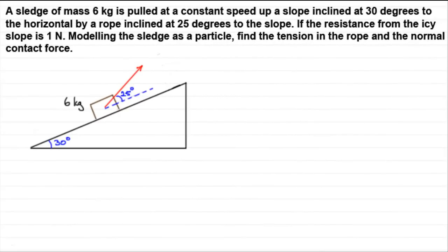Welcome to another video in my tutorials on using Newton's second law of motion — force equals mass times acceleration. We've got a sledge of mass six kilograms pulled at a constant speed up a slope inclined at 30 degrees to the horizontal by a rope inclined at 25 degrees to the slope. The resistance from the icy slope is one Newton. Modelling the sledge as a particle, find the tension in the rope and the normal contact force.